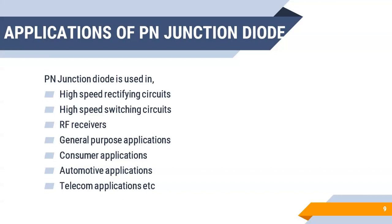Where are we using this PN junction diode in our day-to-day life? PN junction diode is used in high-speed rectifying and switching circuits, in general purpose applications, consumer applications, and also in telecom applications.